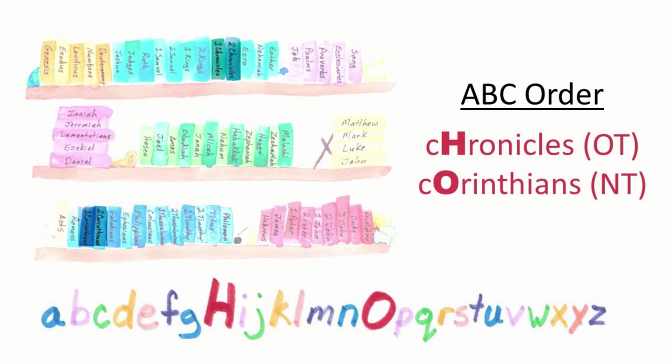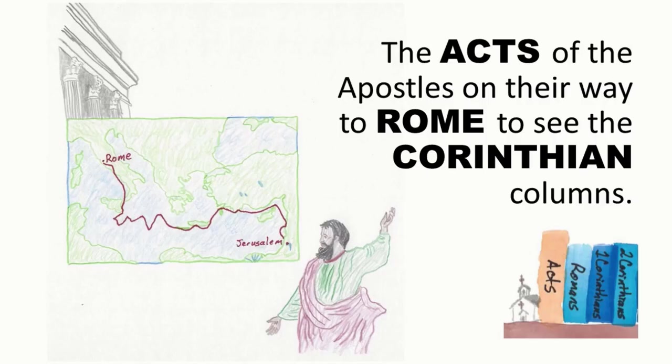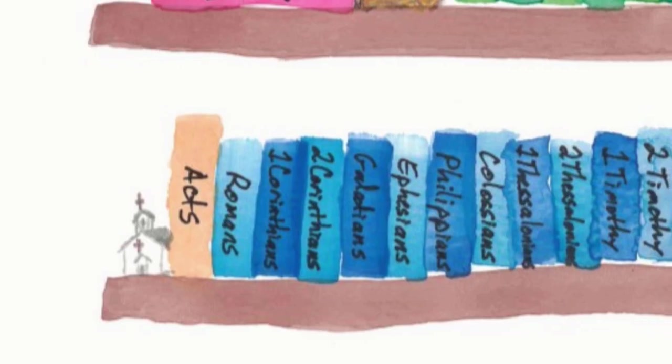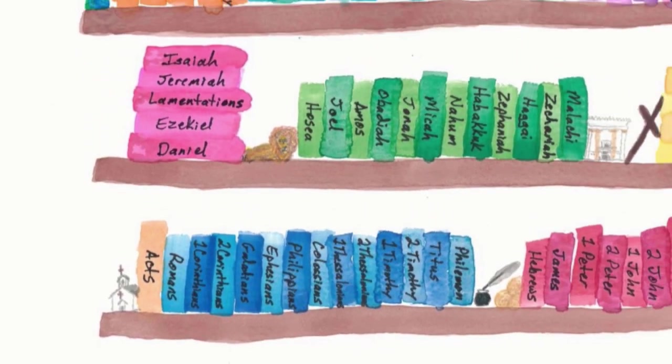Attention. Present Bibles. Second Corinthians. Start. First Corinthians, Second Corinthians, Galatians. Chronicles and Corinthians sound a lot alike, but they come in ABC order in the Bible. Chronicles comes in the Old Testament and Corinthians comes in the New Testament. After the Gospels comes Acts — the Acts of the Apostles on their way to Rome to see the Corinthian columns. So we have Acts, Romans, 1st and 2nd Corinthians. Acts is the book of New Testament history, then come the Pauline epistles or Paul's letters.